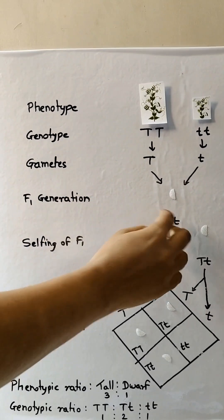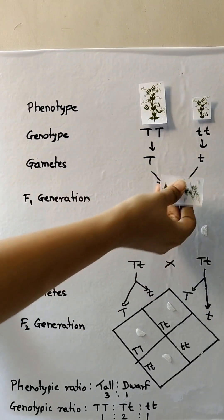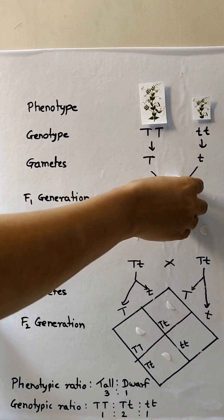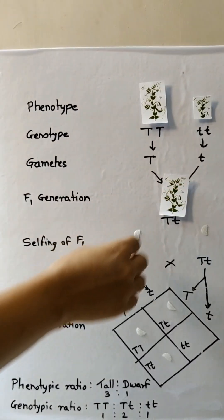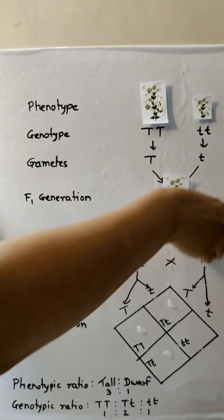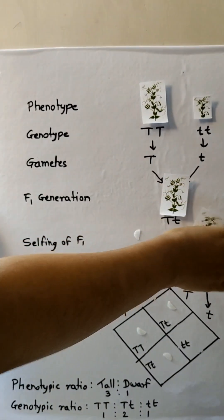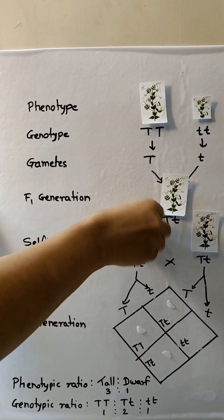Here gametes from the tall plant is capital T and dwarf is small t. Here we get F1 generation, that is first filial generation, capital T small t. That is heterozygous, and the parents are the homozygous genotype.